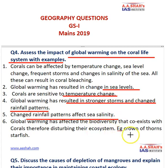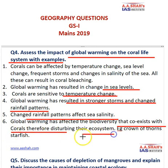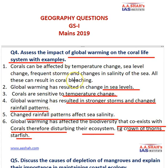Global warming has also affected the biodiversity that coexists with the coral, thereby disturbing the ecosystem. For example, we have read about the crown of thorns starfish, which feeds on coral. All of this, supplemented with a diagram about coral bleaching, can help you write the answer. For examples, you can obviously write about the Great Barrier Reef, which has now been declared dead.